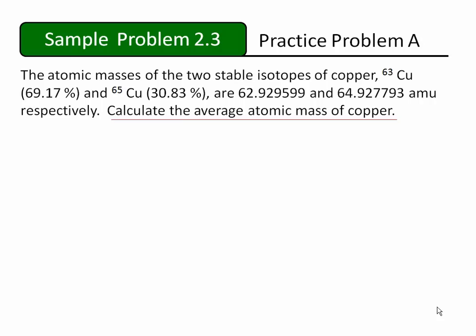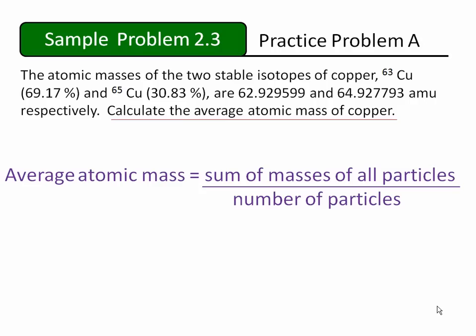There isn't an equation in the textbook to calculate average atomic mass, so we'll have to rely on common sense to do this one. An average mass for a set of particles, like atoms in this case, would be calculated by finding the sum of the masses of all of the atoms, and then dividing that sum by the number of atoms in the sample.